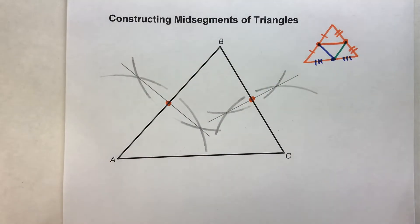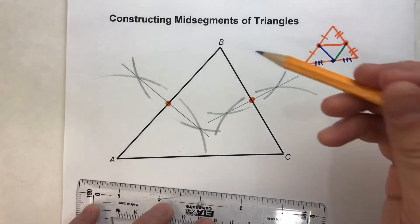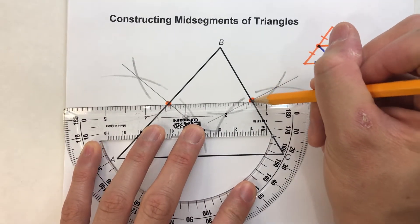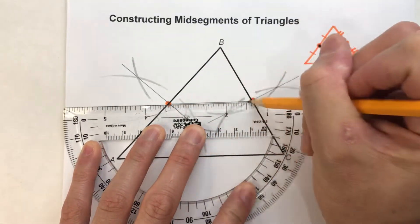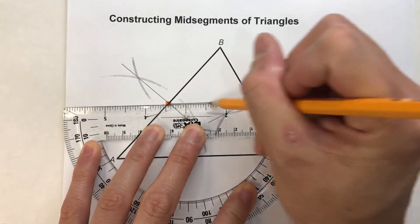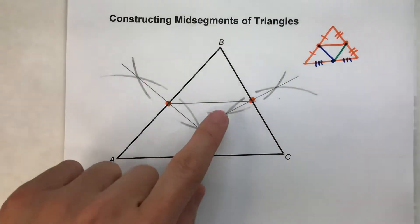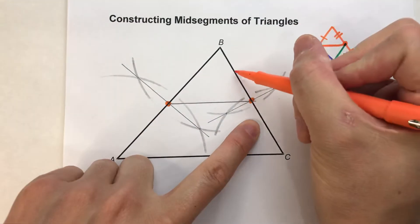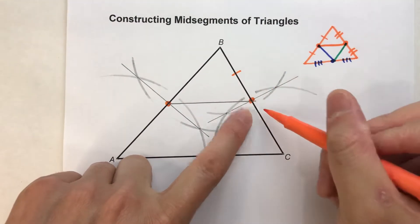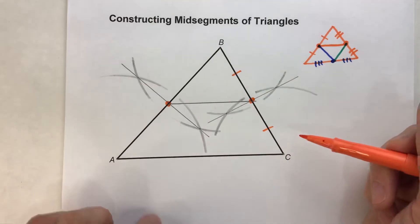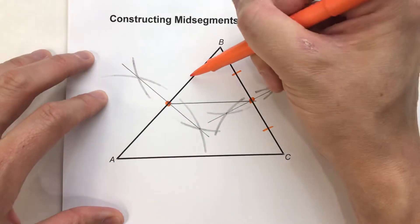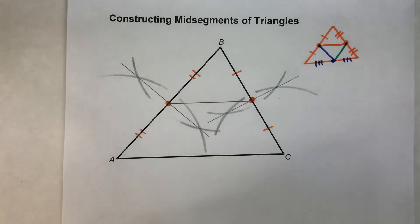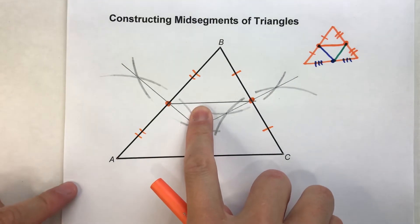So I have the two mid-points. Now, to construct the mid-segment, all I do is use my straight edge and connect the two mid-points together. There it is — that is my mid-segment. I should probably mark this: this is a mid-point over here, so I'll mark these two sides congruent. This is the mid-point over here, so these two sides are congruent. Mid-segment constructed.